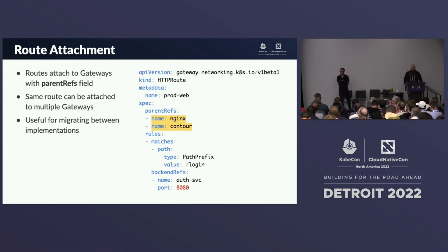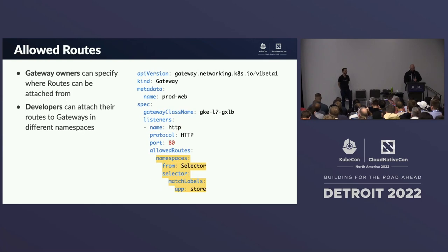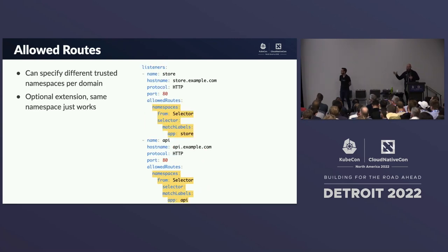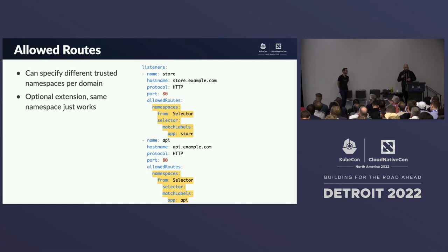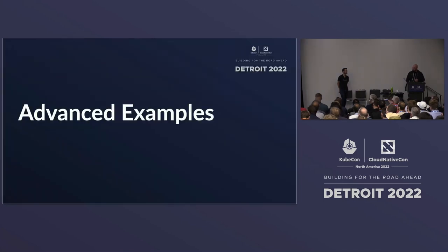Routes attach to Gateways with parentRef fields. The same route can be attached to multiple Gateways — useful if you need to migrate between implementations or have two implementations serve the same route. Gateway owners can specify where routes can come from using allowed routes, so developers can attach their routes to Gateways in different namespaces. For example, store.example.com can only allow route attachments from namespaces labeled 'store', and api.example.com only from namespaces labeled 'api'.